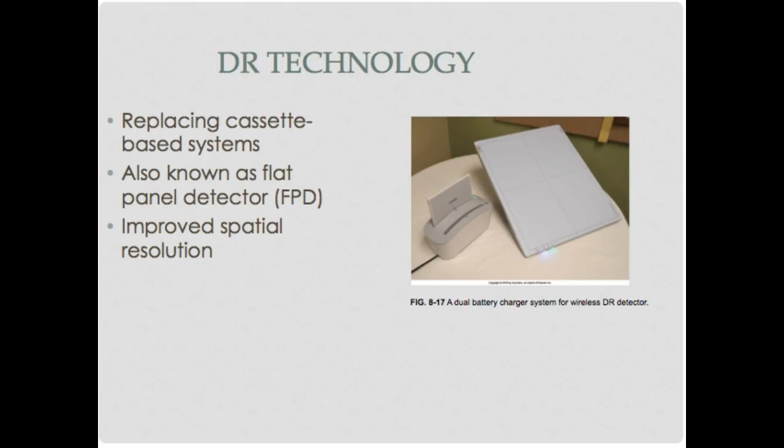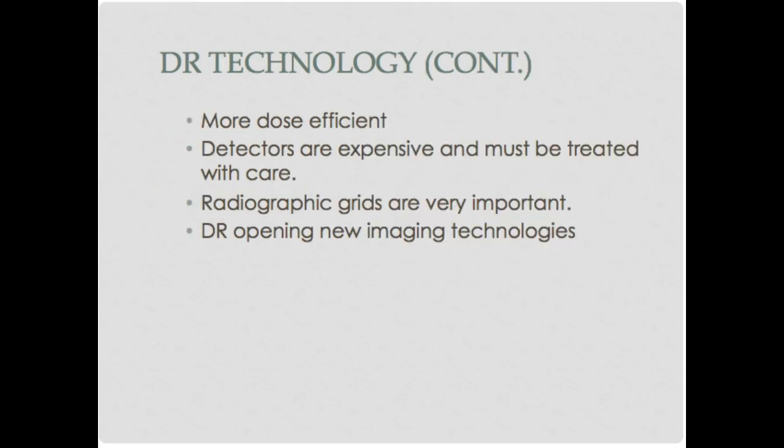DR technology replaces cassette-based systems with flat panel detectors (FPD). It has improved spatial resolution and is more dose-efficient. Detectors are very expensive and must be treated with care, though prices will drop as technology advances. DR detectors are very sensitive to scatter radiation, so using radiographic grids is very important — even more so than with CR plates. New imaging technologies include tomosynthesis, which used to be a 2D technique but is now considered 3D technology.